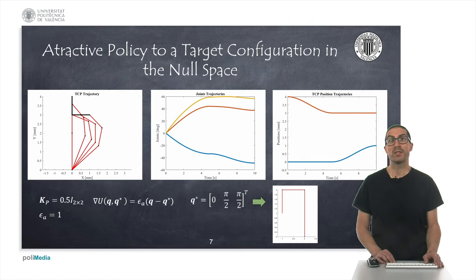In this particular example, we can see how the robot not only fulfills the main task, but also tends to the target configuration. As a consequence, joint trajectories tend to the target ones.